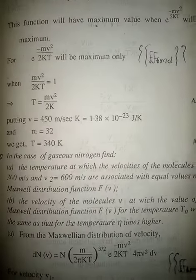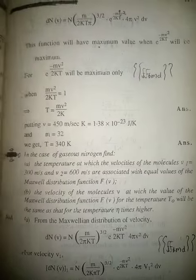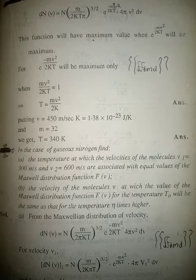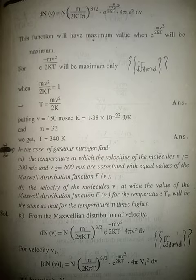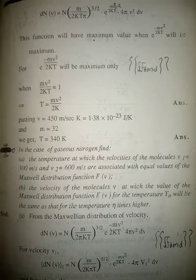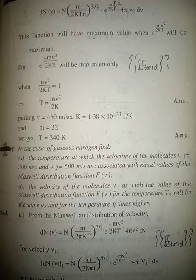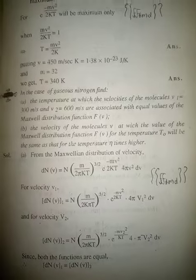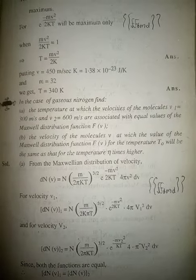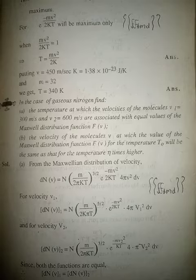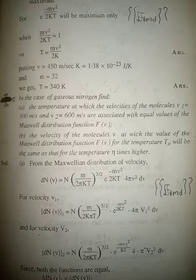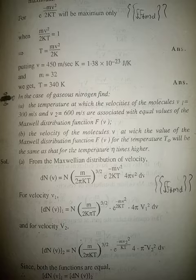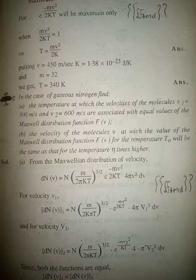This implies T = mv²/2k. Putting v = 450 m/s, k = 1.38 × 10⁻²³ J/K, and m = 32 (atomic mass units), we get T = 340 K. Next, in the case of gaseous nitrogen, find: (a) the temperature at which...